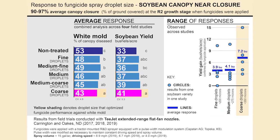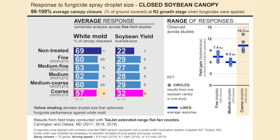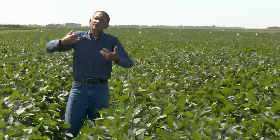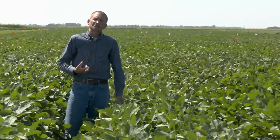When the canopy closure has averaged between 80 and 90%, we have optimized fungicide performance with a droplet size that is in the middle of the medium spectrum. When the canopy closure is more than 90% on average across the footprint of our study, we have optimized our fungicide performance with coarse droplets. This applies anywhere from average canopy closure of 92% to 99%. When there is not much ground showing between the rows, you have a pretty tight canopy and you need velocity — you need a heavier droplet size to get inside.